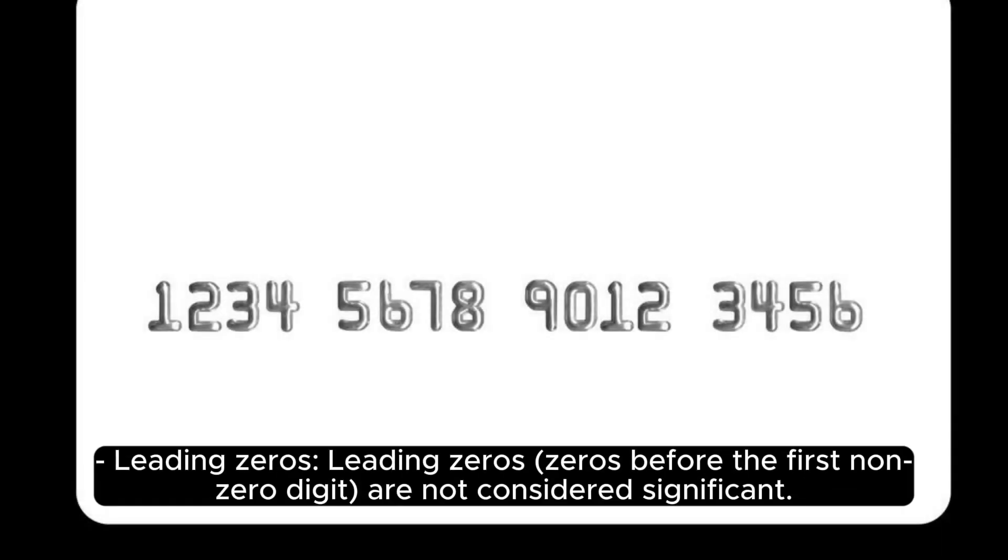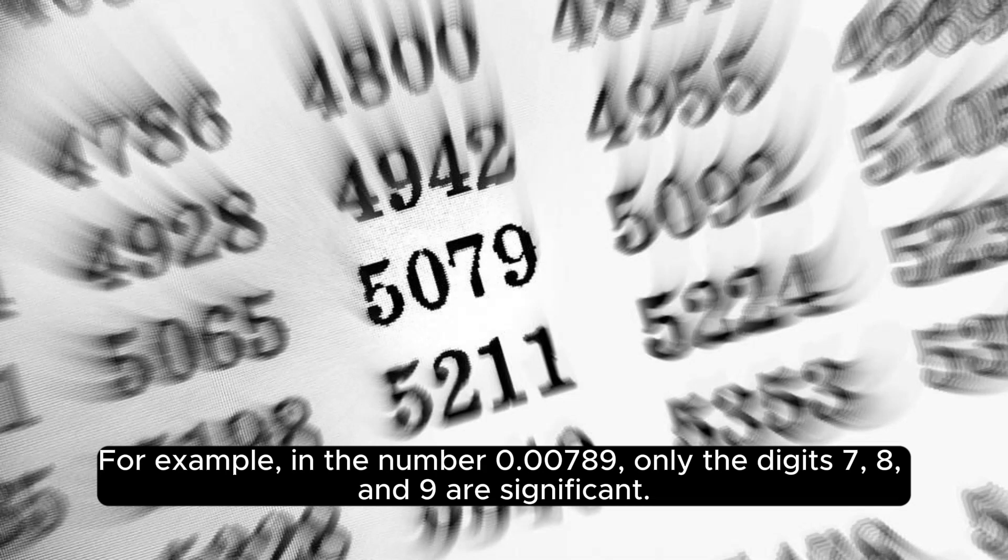Leading zeros: Leading zeros, zeros before the first non-zero digits, are not considered significant. For example, in the number 0.00789, only the digits 7, 8, and 9 are significant.